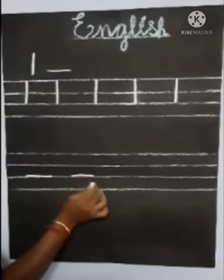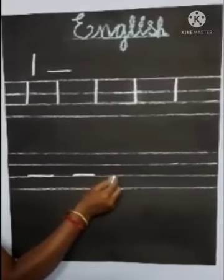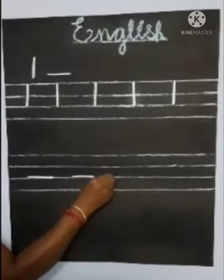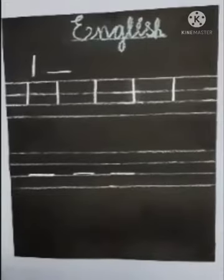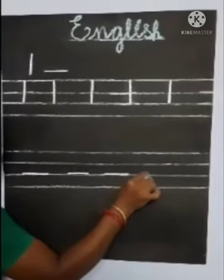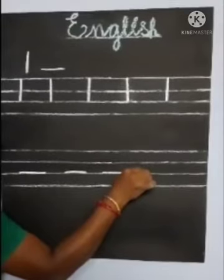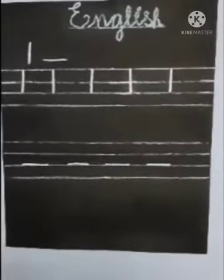Once again we try the same. Put your pencil in third limit, draw a straight line from left to right. What is this? This is slipping stroke. Repeat it again: put your pencil in third limit, draw a straight line from left to right.